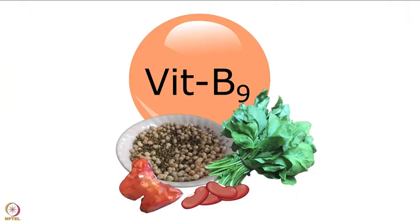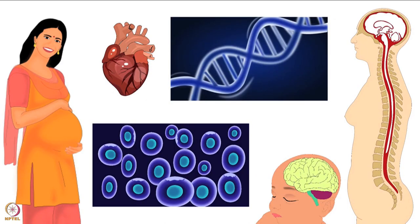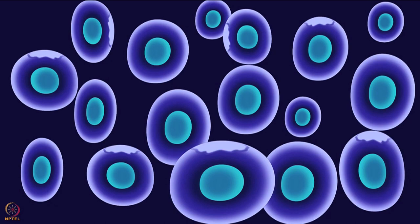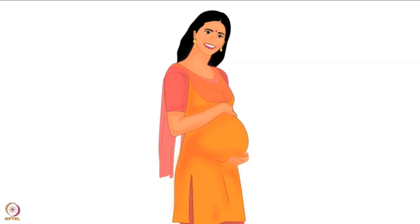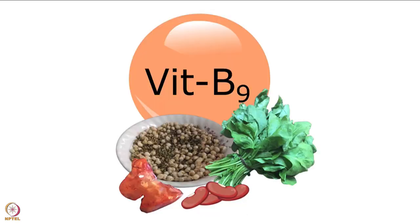Folate is one of the important B vitamins required for various functions in the body. It is essential for cell growth and repair and is also required for a healthy pregnancy. Beans and pulses are excellent sources of folate. Green leafy vegetables such as spinach, amaranth leaves, colocasia leaves, and agathi leaves are also rich in folate. Some vegetables like cauliflower, drumsticks, and lady's finger also contain folate.